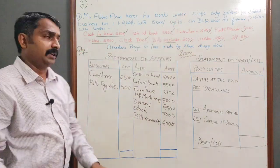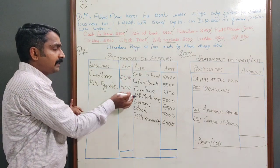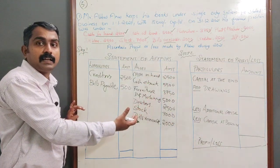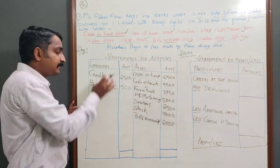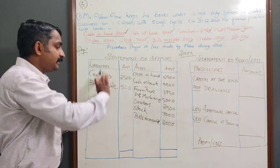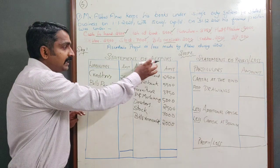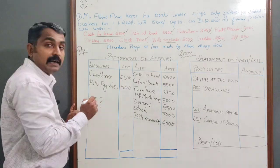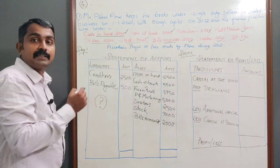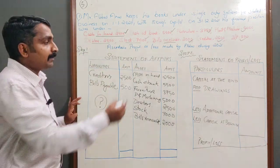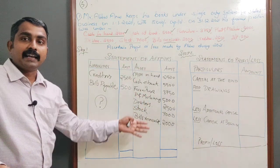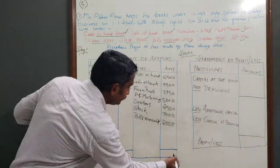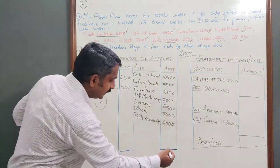We now have all the items entered. The liability side totals 2,500 plus 500, which equals 3,000. The asset side total is 28,250. On the liability side, we have the liabilities and the missing figure which is capital at the end — the balancing figure.